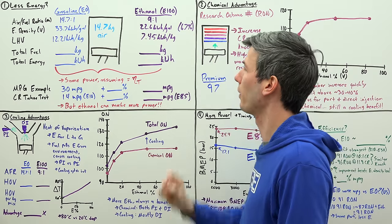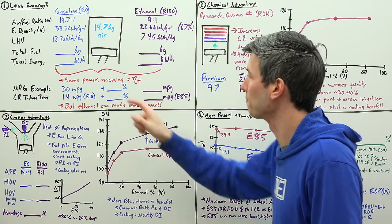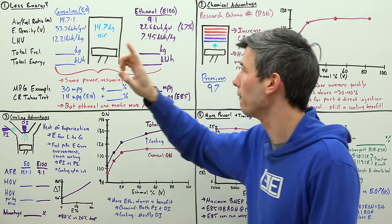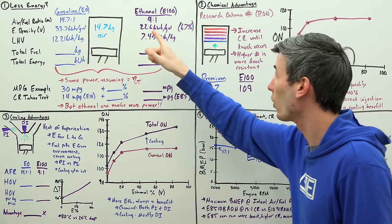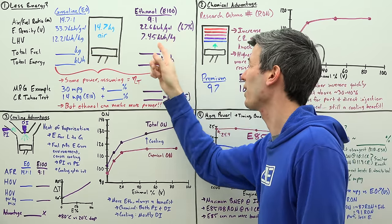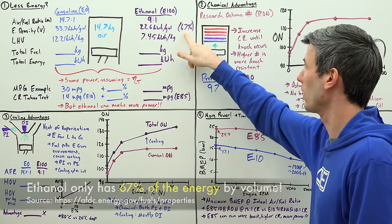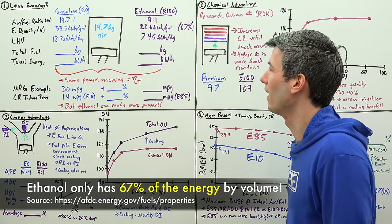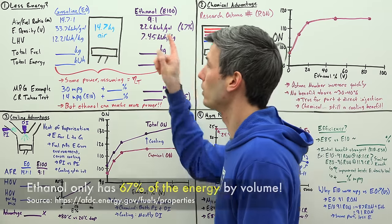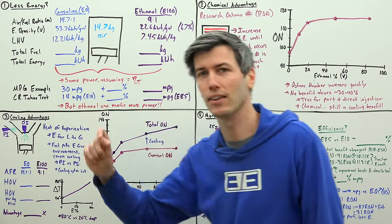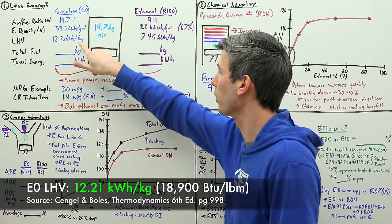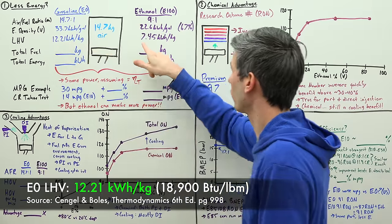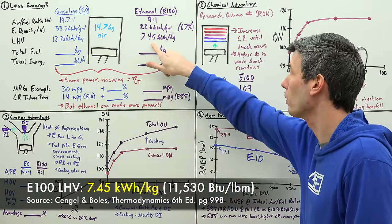So the energy density by volume of gasoline is 33.7 kilowatt hours per gallon versus only 22.6 kilowatt hours per gallon of ethanol, so it's at about 67% of the energy content. Now if we look at energy density by mass, in other words the lower heating value, it's 12.21 kilowatt hours of energy per kilogram of gasoline versus just 7.45 kilowatt hours per kilogram of ethanol.